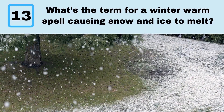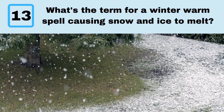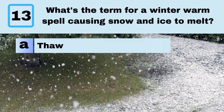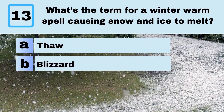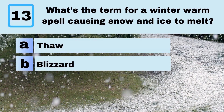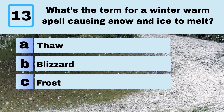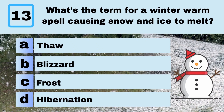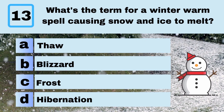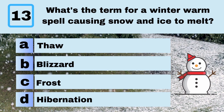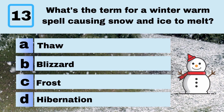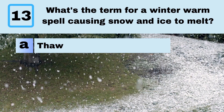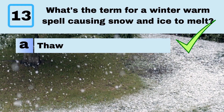Question 13. What's the term for a winter warm spell causing snow and ice to melt? A. Thaw. B. Blizzard. C. Frost. D. Hibernation. Answer: A. Thaw.